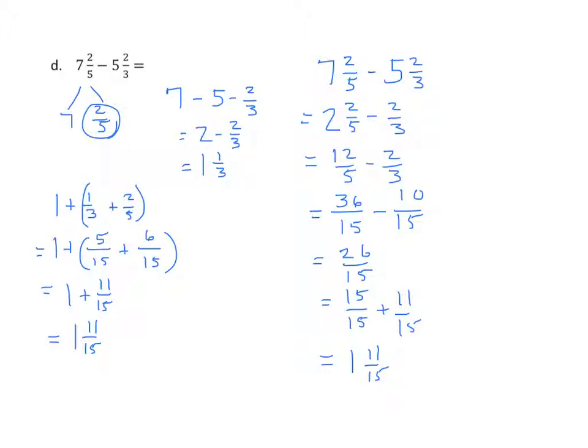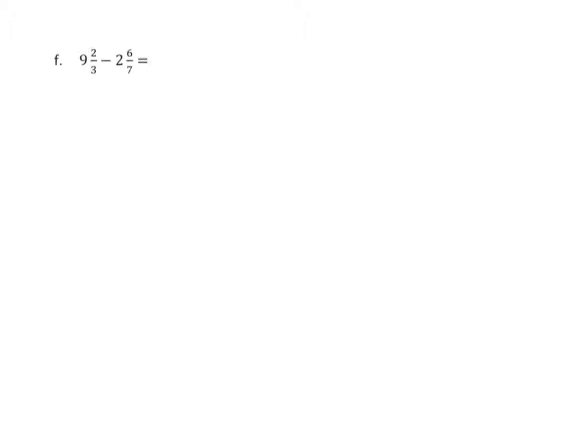We'll run through one more quick example for you. And then we'll do a word problem. Okay, method one, decompose. So we're going to take my whole and separate it from the fraction. So we now have 9. We're going to subtract that subtrahend, decomposing it. So 9 minus 2 minus 6 sevenths.